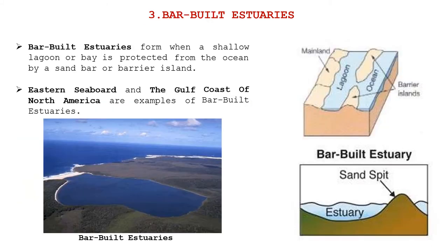The third type is bar-built estuaries. These form when a shallow lagoon or bay is protected from the ocean by a sandbar or barrier island. The eastern seaboard and the Gulf Coast of North America are examples of bar-built estuaries. In the diagram you can see the lagoon, ocean, and two barrier islands shown clearly. On the right side you can also see a sand spit forming the estuary.